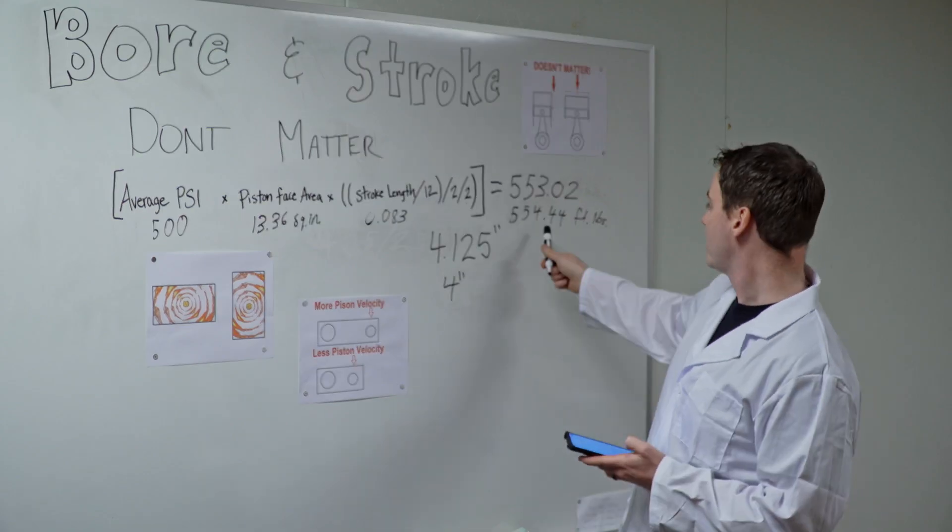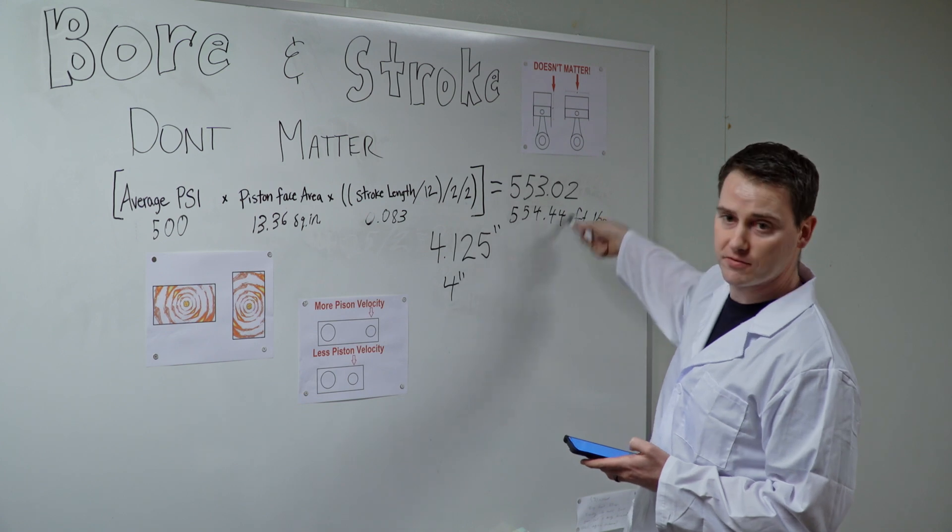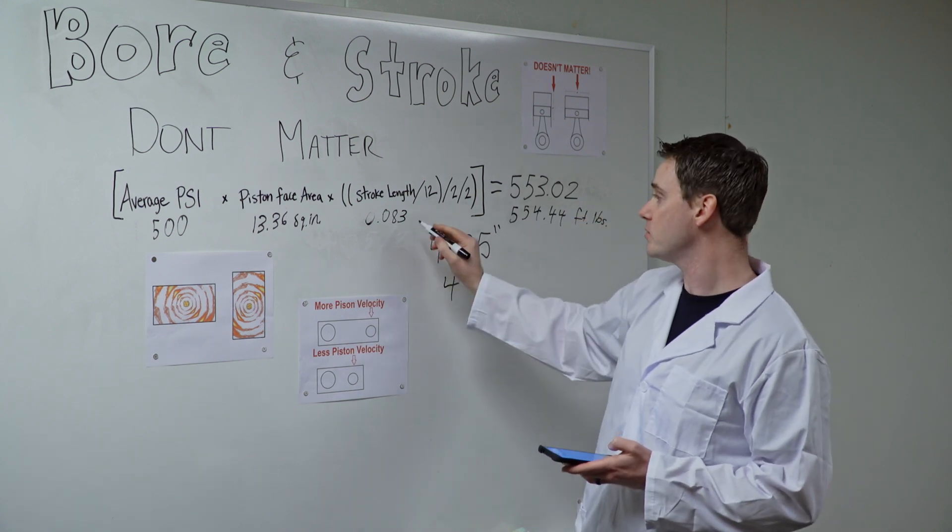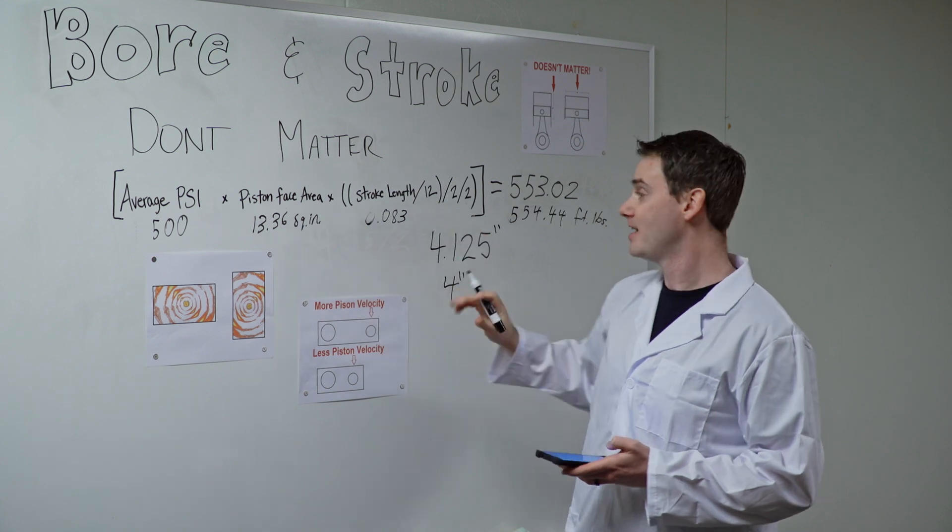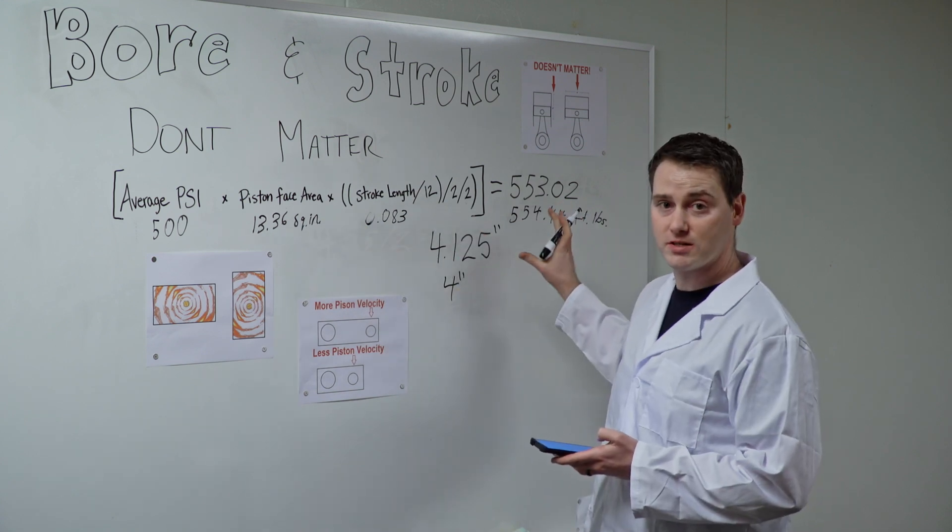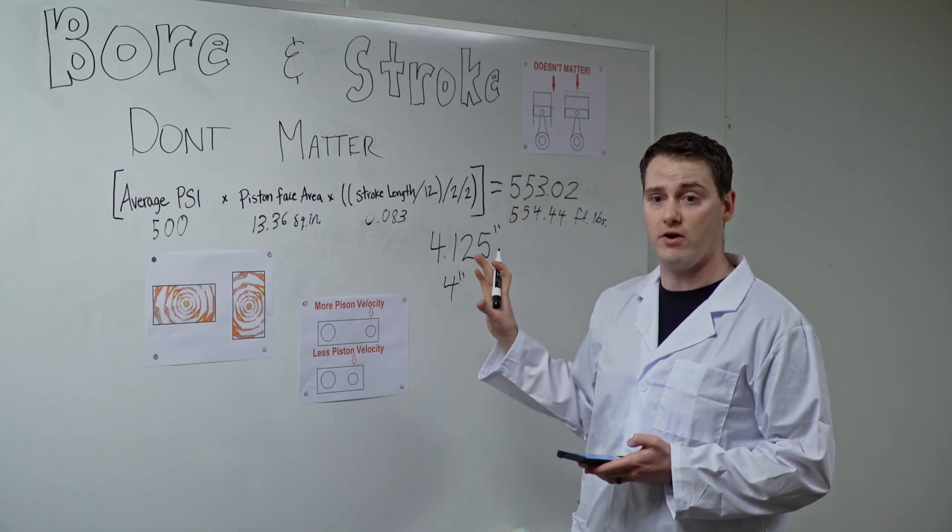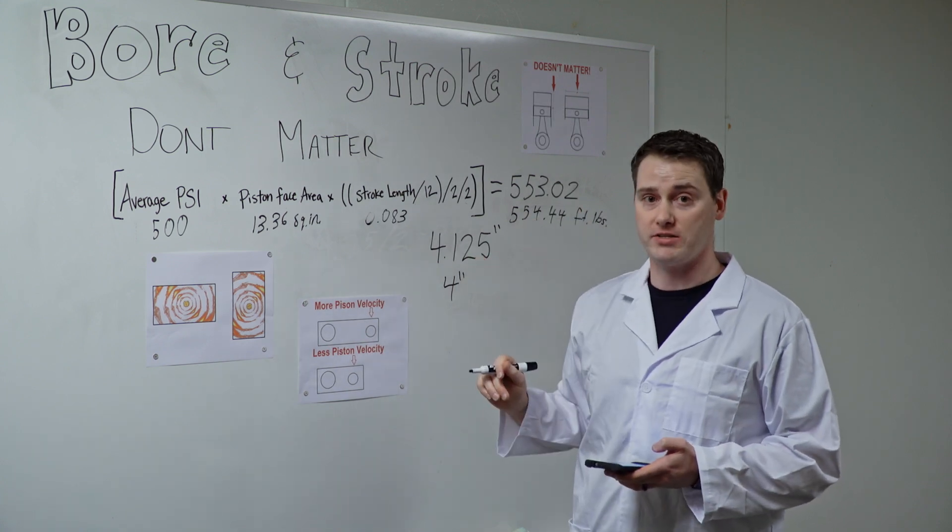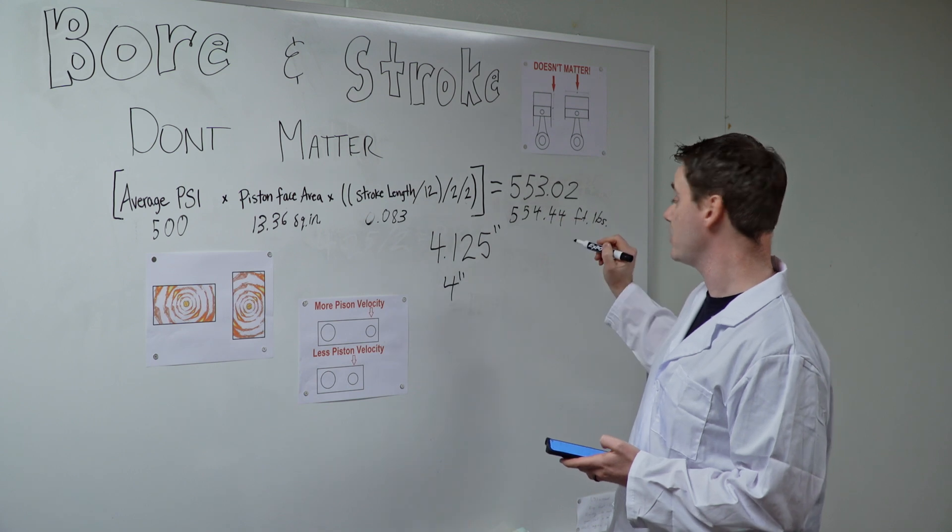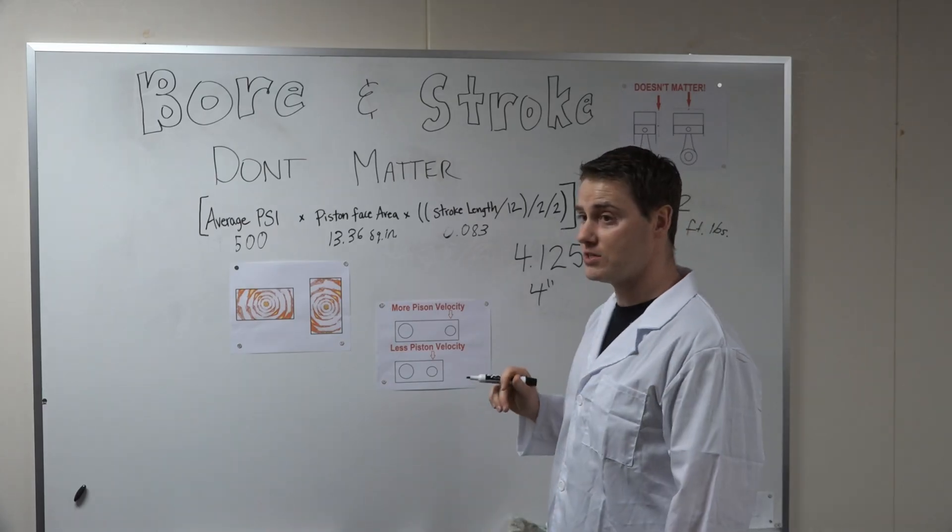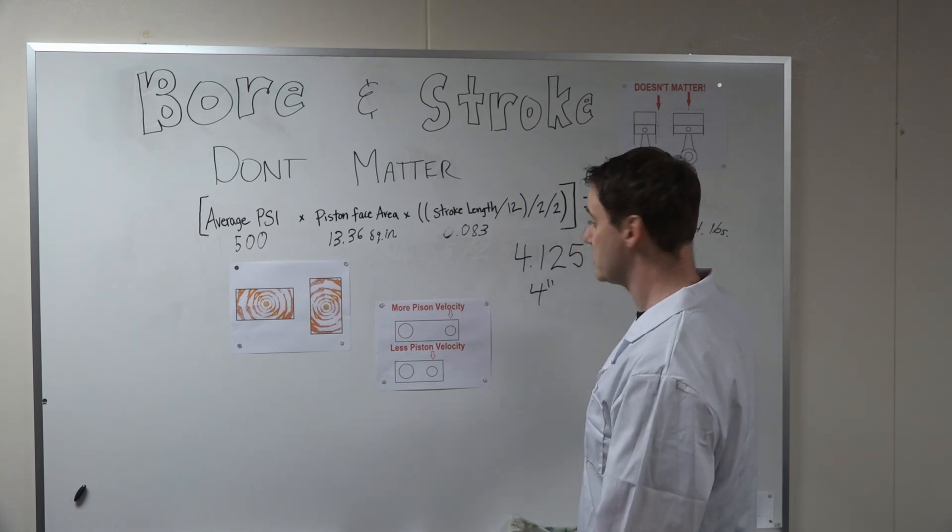Pretty darn similar, isn't it? And that one foot pound difference that we're seeing right here is really just a rounding error because we're using so many decimal points. But for all intents and purposes, it is the same. I mean, if you throw an engine on a dyno back-to-back runs, you're going to see more variation than one foot pound like that. As long as your displacement is the same, they equal the same amount of torque.